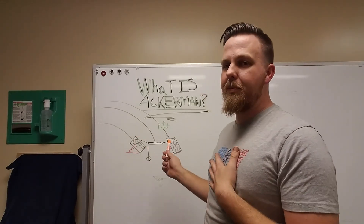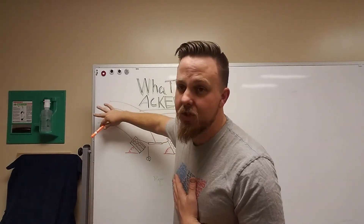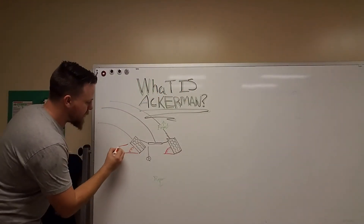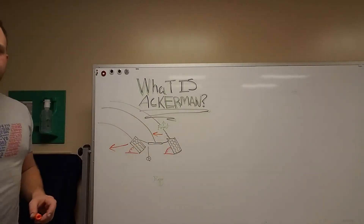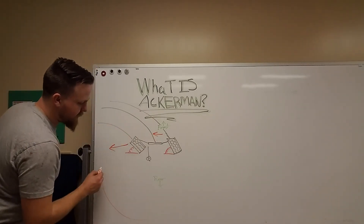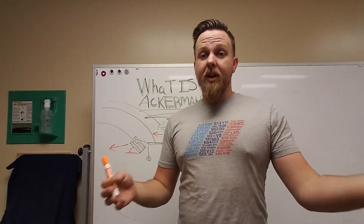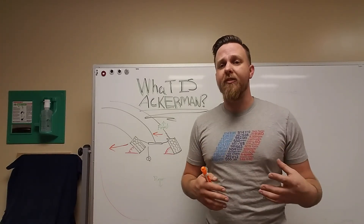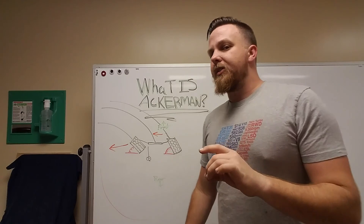In drifting, this starts becoming at odds with normal Ackerman design because the wheels are no longer pointed in the direction of the arc they're making. Instead of the front wheels tracing an arc, the arc is actually being made at the rear end — the arc is being made with the bottom of the car. That's one of the reasons why Ackerman is really important in drifting, and actually in all motorsport, but I think drifting is the most critical to get it right.